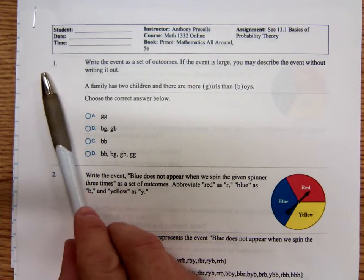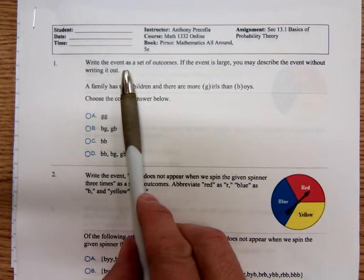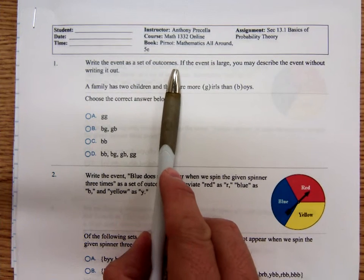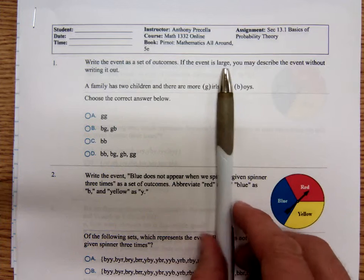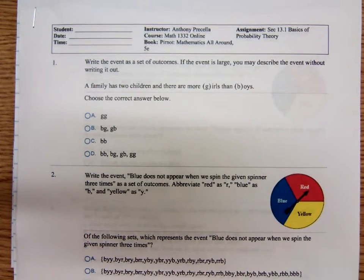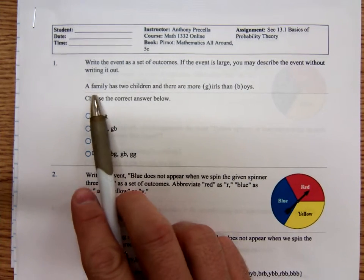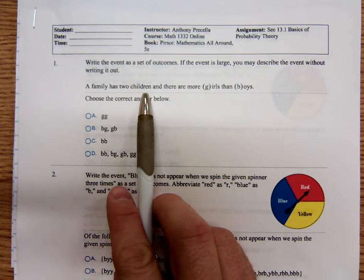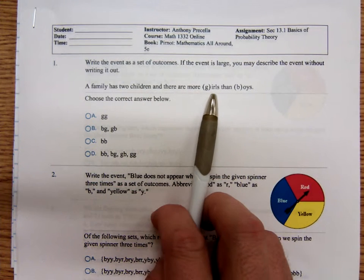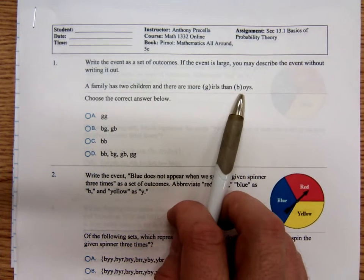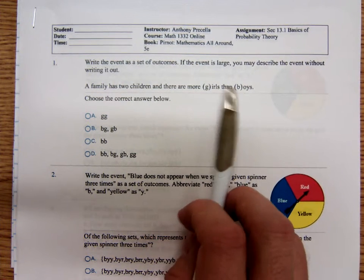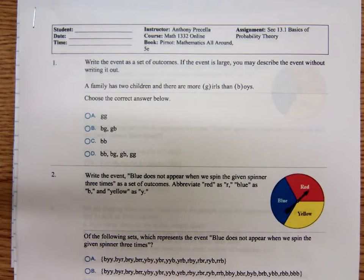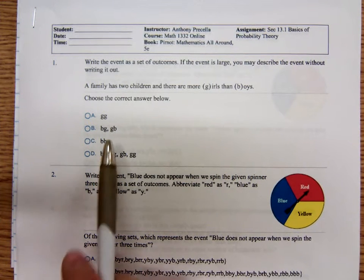Problem number one, write the event as a set of outcomes. If the event is large, you may describe the event without writing it out. A family has two children and there are more girls than boys. Which of these, look at how they're using G for girls and B for boys. Which of these would have more girls than boys?